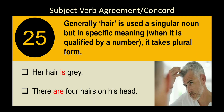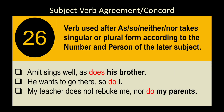Rule 27: 'Hair' is generally used as a singular noun and takes a singular verb. 'Her hair is grey' — we do not say 'her hairs are grey.' But when 'hair' is qualified by a specific number, it takes a plural verb. 'He has only four hairs on his head' — here 'hair' is qualified by the number four, so it becomes plural and we say 'there are four hairs on his head.'